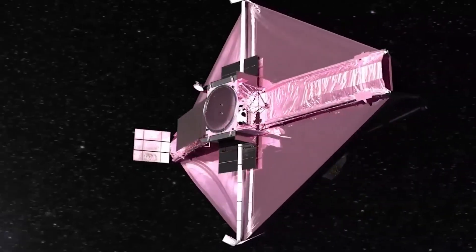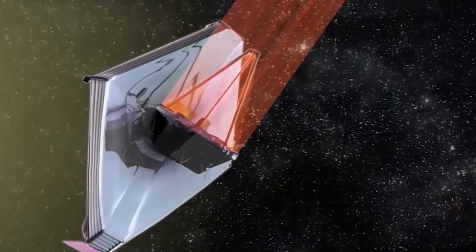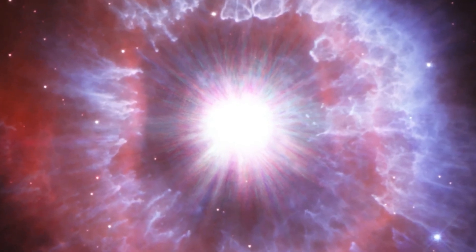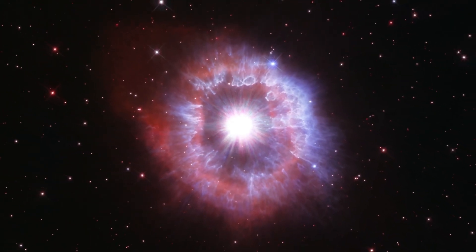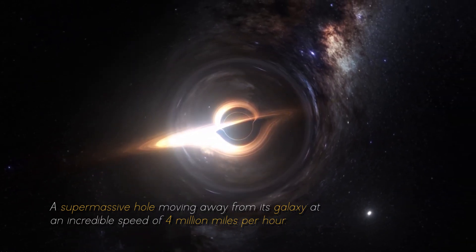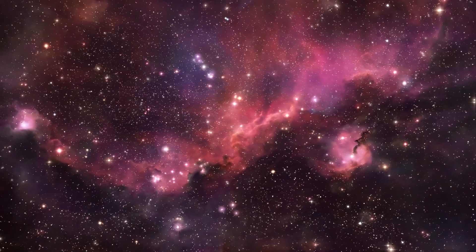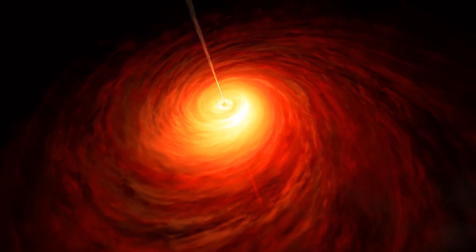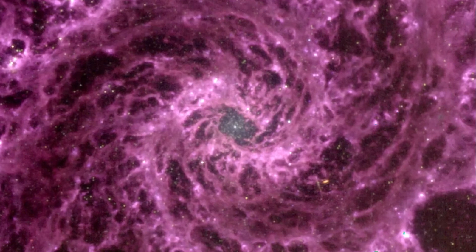In a surprising turn of events, NASA's James Webb Space Telescope has made a discovery that has astronomers around the world in awe. A few weeks ago, the telescope discovered the earliest known galaxy in the universe, but it now has detected something even more massive. A supermassive hole moving away from its galaxy at an incredible speed of 4 million miles per hour. This latest discovery has very important implications and has generated much speculation among scientists and space enthusiasts about what it means for our understanding of the cosmos.